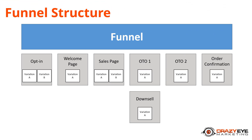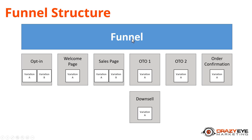In this video and the following videos, we're going to discuss the funnel settings and funnel structure — basically how ClickFunnels breaks things down. In this particular video, we're covering the funnel level settings. There are different levels inside ClickFunnels: funnel level settings impact your entire sales funnel — whatever you adjust there impacts everything else, all your pages. Then we have steps or pages in your funnel, like the opt-in page, welcome page, sales page, OTO1, OTO2, order confirmation, downsell page — each with their own settings. And within each page or step, we have different variations for split testing. We're doing funnel level settings in this video, so let's go to ClickFunnels.